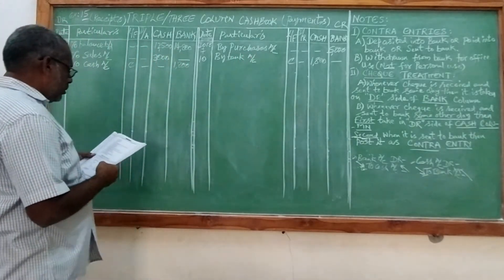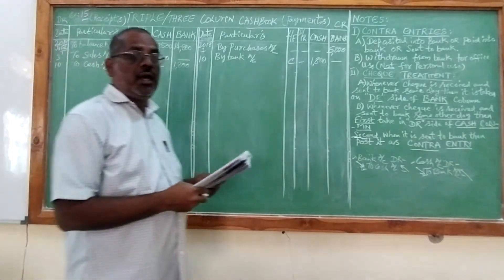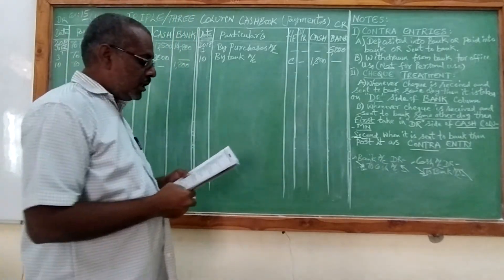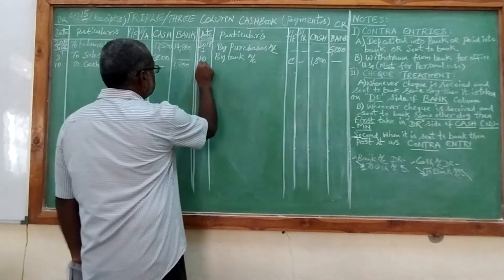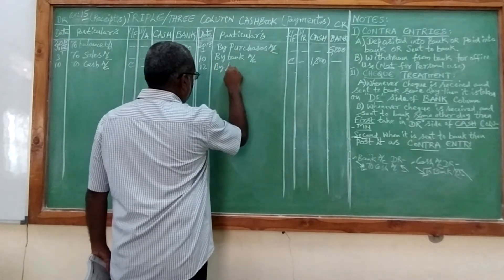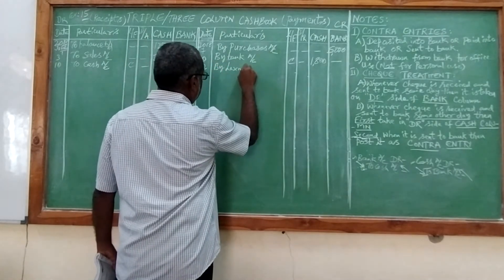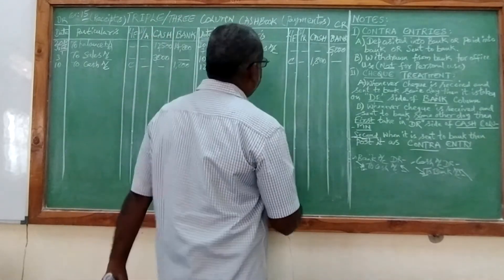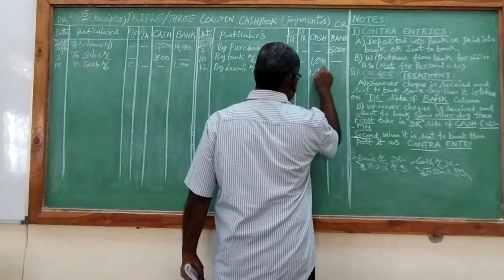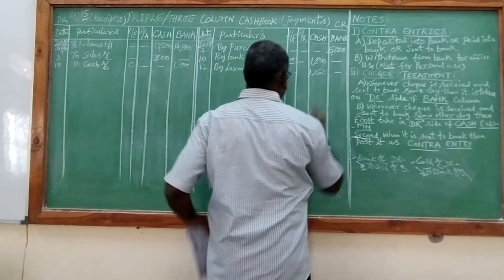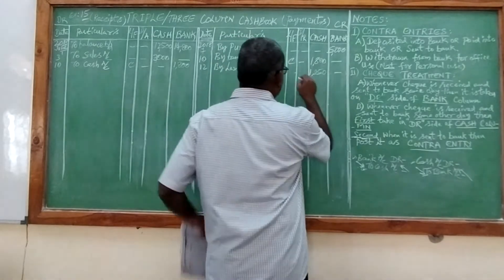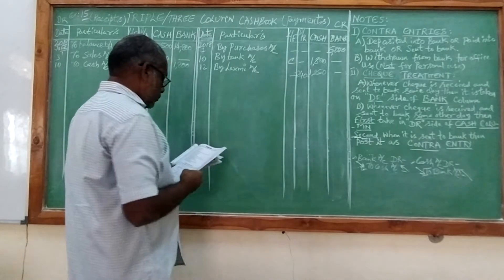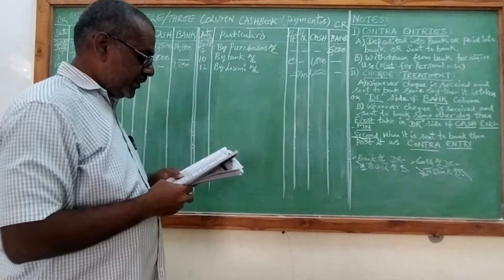June 12th, cash paid to Lakshmi 1,850 and discount received 240. We are paying cash, so it is a payment by Lakshmi — 1,850 in the cash column, and discount is 240 in the discount column.